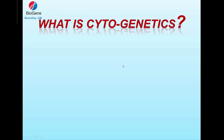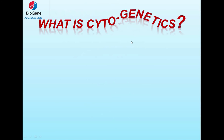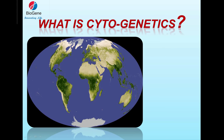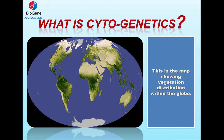So, what is Cytogenetics? Before getting into that, let us consider this map. This map shows the vegetation distribution within the globe. However, it is not showing the different states, the river distribution, the railway distribution, and so on.